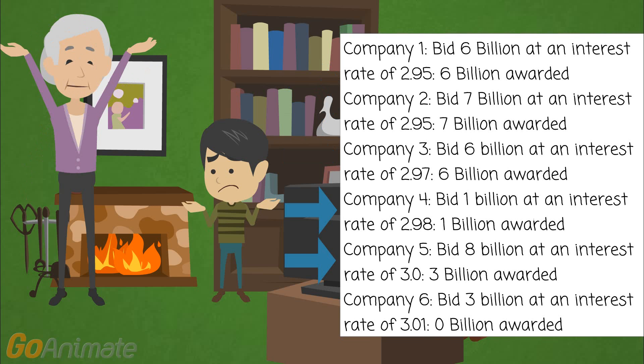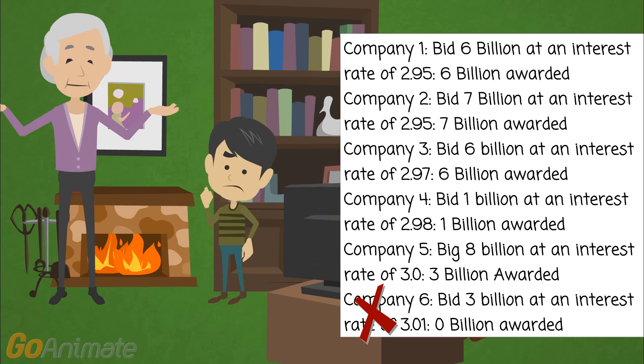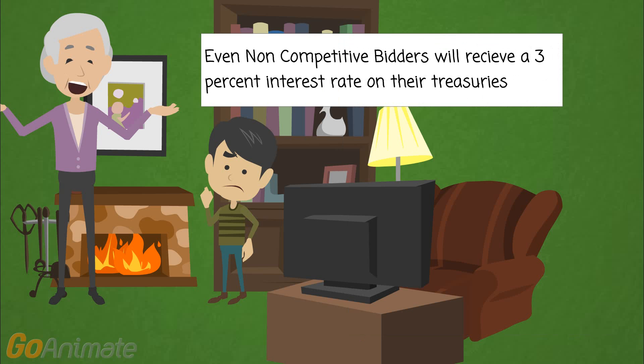This continues until we reach Company No. 5. Since Company No. 5 wanted $8 billion, but there is only $3 billion worth of securities remaining, they only get awarded $3 billion. However, since Company 5 is the last company, the interest rate they requested becomes the standard interest rate for all Treasuries. So Company 1 obtains a 3% interest rate. And we can't forget about our non-competitive bidders. They are also affected by the results of the competitive bidding. So everyone who bought Treasuries received the same interest rate as Company 5, which was 3%.